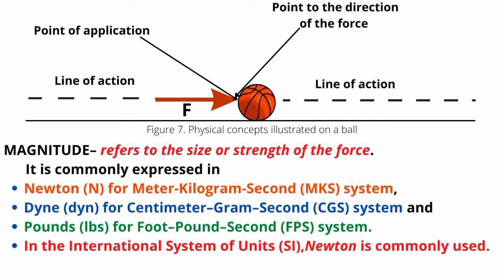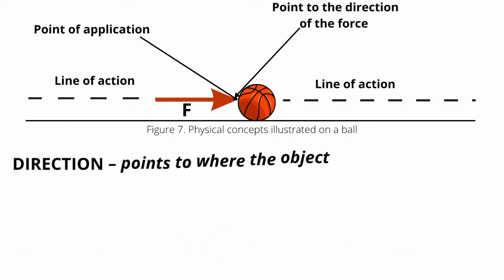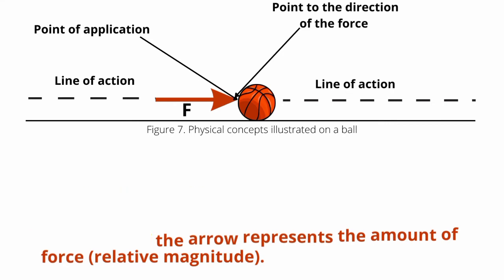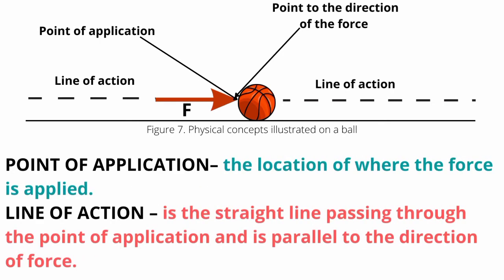Magnitude refers to the size or strength of the force. It is commonly expressed in Newton for meter-kilogram-second system, dyne for centimeter-gram-second system and pounds for foot-pound-second system. In the International System of Units, Newton is commonly used which is named after Sir Isaac Newton, an English physicist and mathematician. Direction points to where the object goes. The direction of the arrowhead indicates the direction of the force. The length of the arrow represents the amount of force, relative magnitude. Point of application, the location of where the force is applied, line of action, is the straight line passing through the point of application and is parallel to the direction of force.